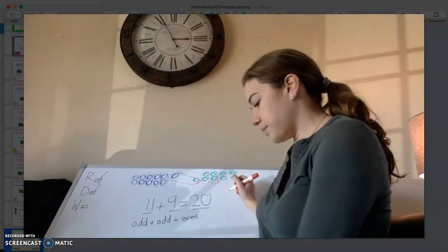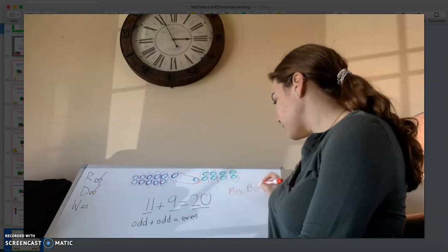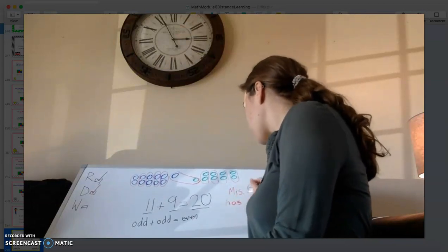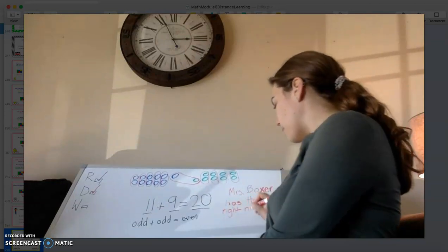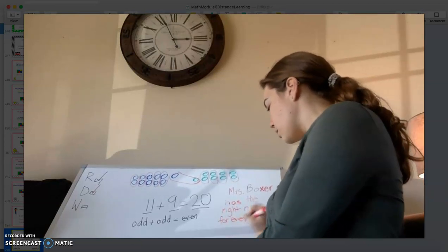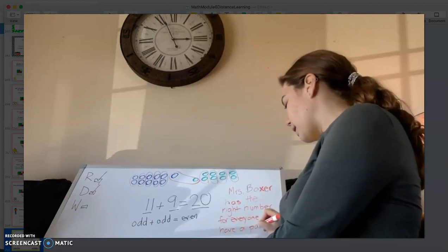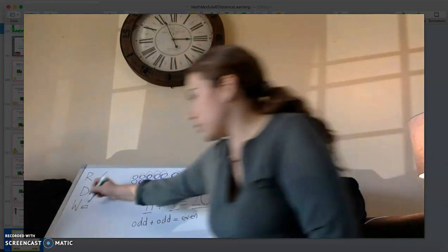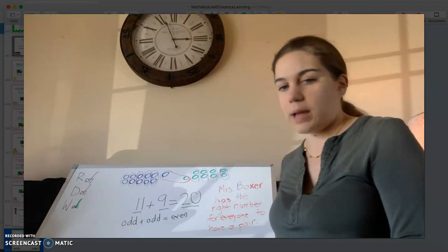We've read our problem and drawn our picture, so now we need to write our sentence. Our sentence says: Mrs. Boxer has the right number for everyone to have a pair. So we've read our problem, drawn our picture, and written our sentence.